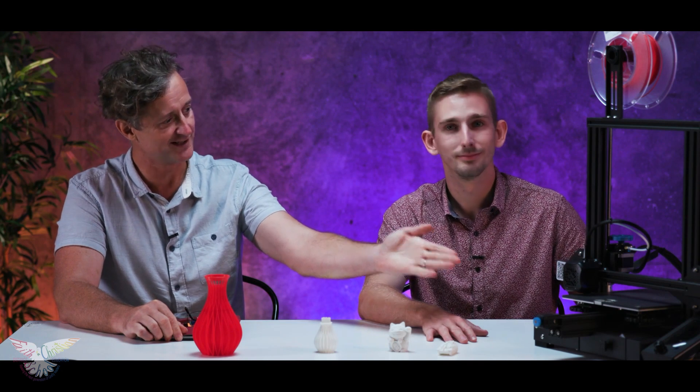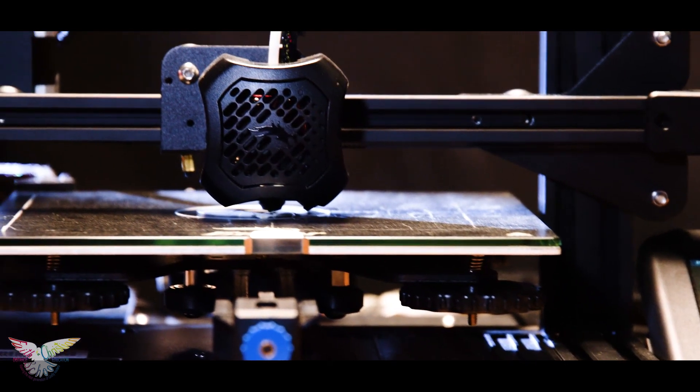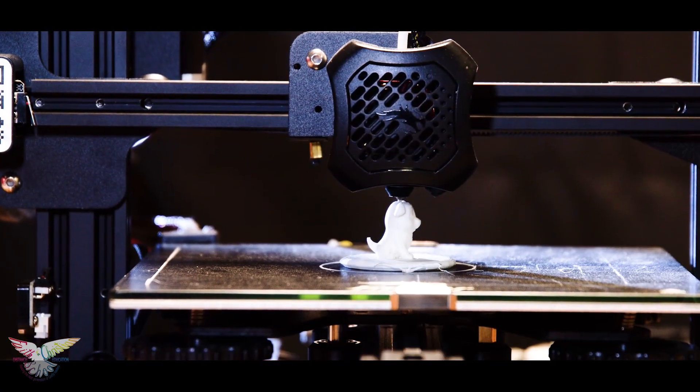Now, I see here, Bryce, what is this contraption on the table? So this contraption here is an Ender 3 V2 3D printer. Well, that's a 3D printer. So what does a 3D printer do?